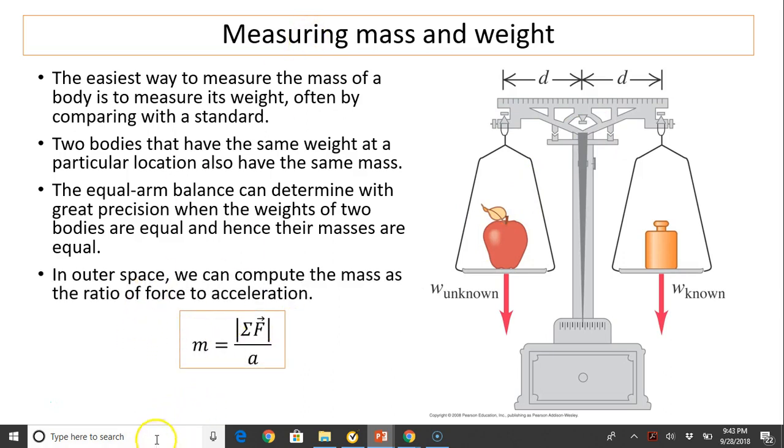But that's on Earth. When you weigh in outer space, when there is no gravitational force acting on the body, we can compute a mass as the ratio of force to acceleration. So we talked about this. This mass is gravitational mass, and this mass we call the inertial mass. As a matter of fact, the two are the same.